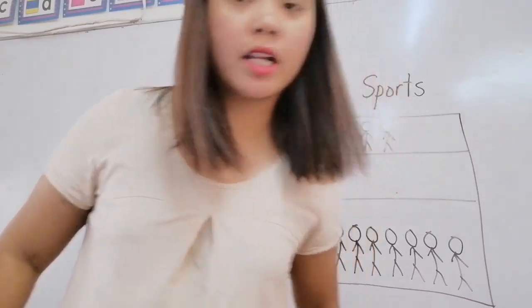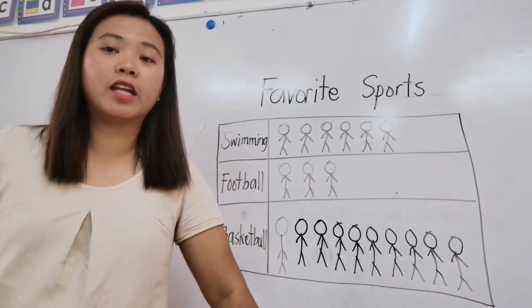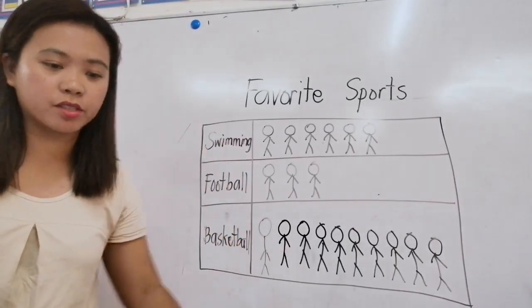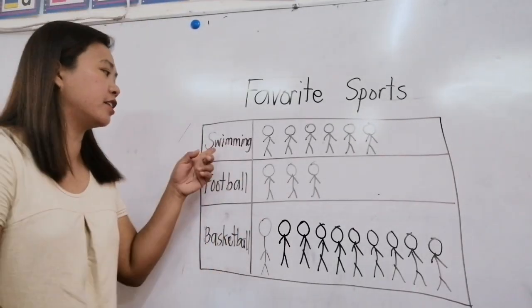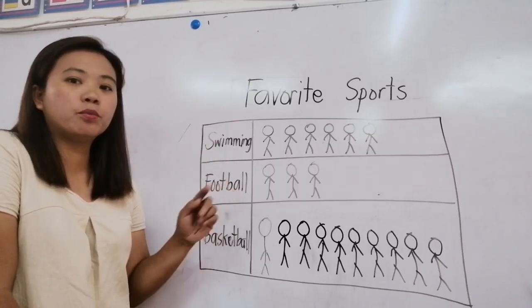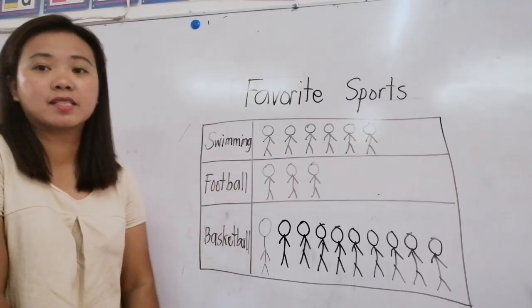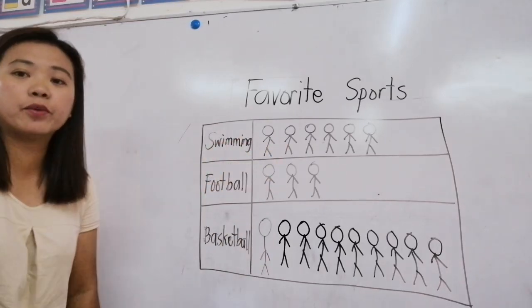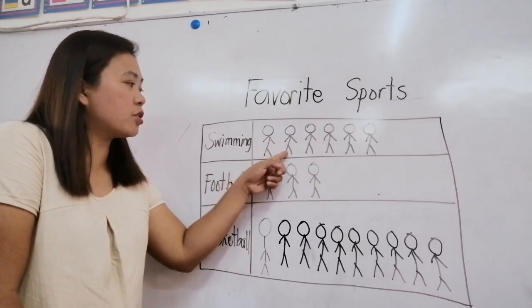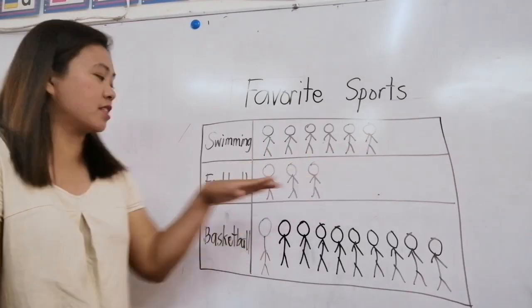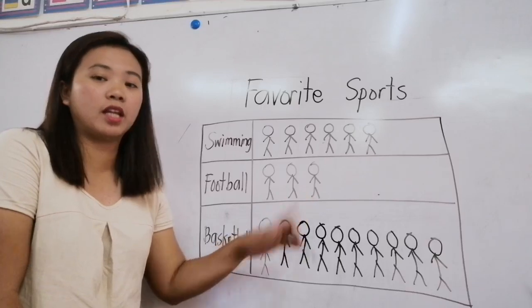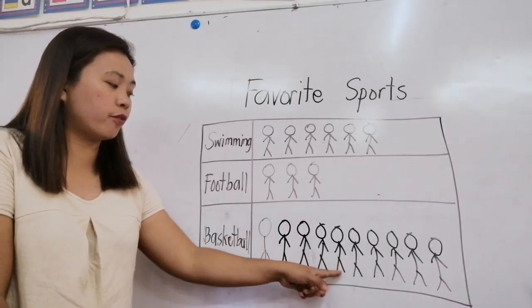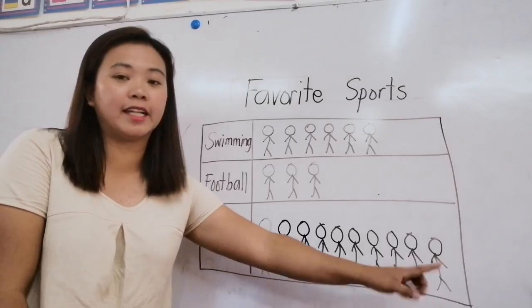For the last one is collecting and organizing data. I have here a chart: favorite sports of grade one. We have here the sports are swimming, football, and basketball. Let's count how many grade one like swimming. One, two, three, four, five, six. How about football? One, two, three. How about basketball? One, two, three, four, five, six, seven, eight, nine, ten.